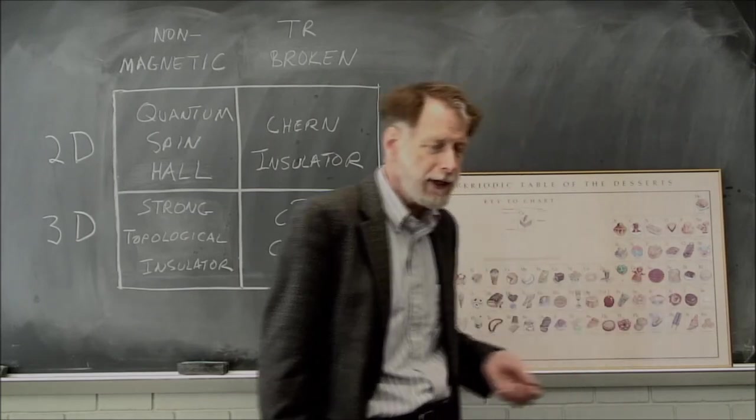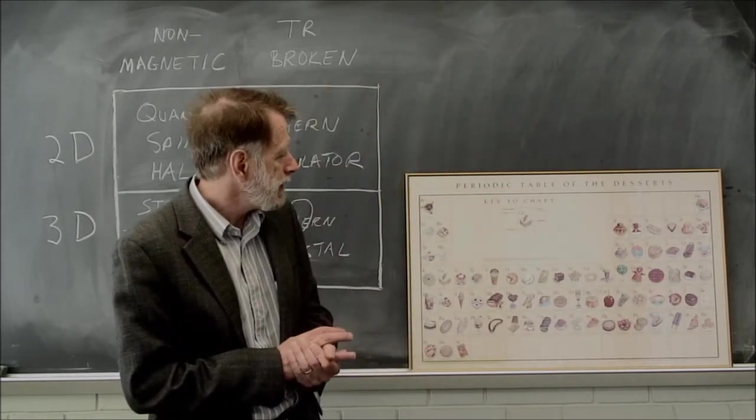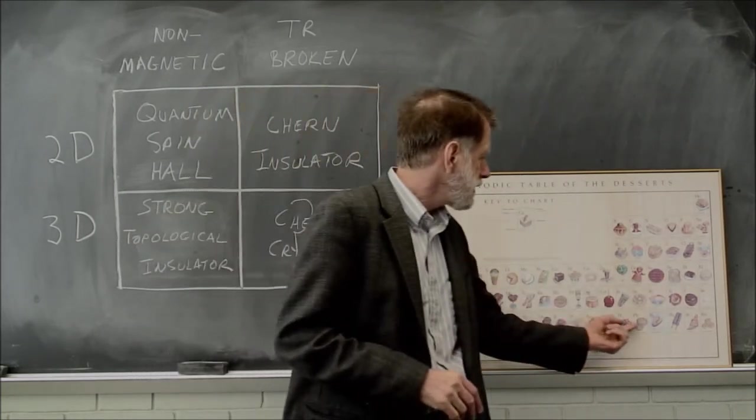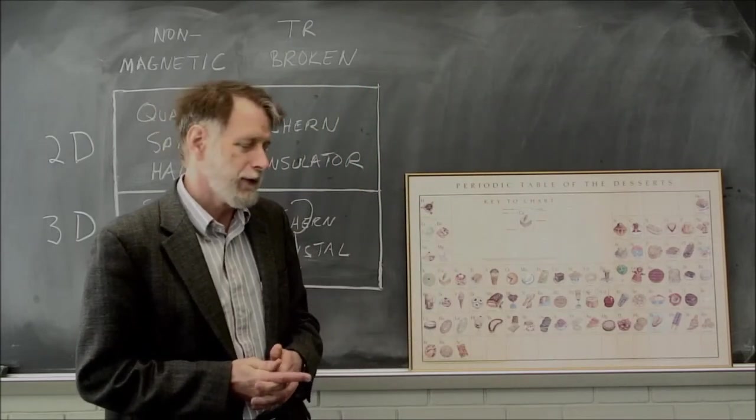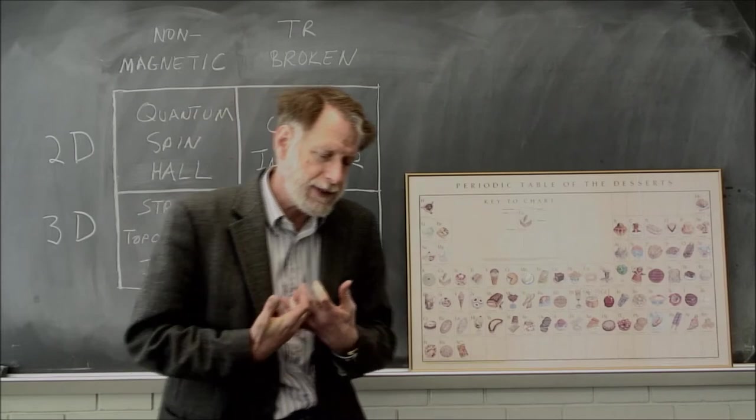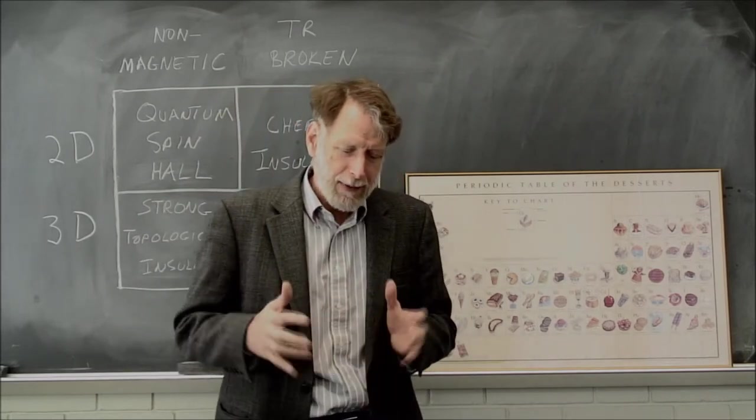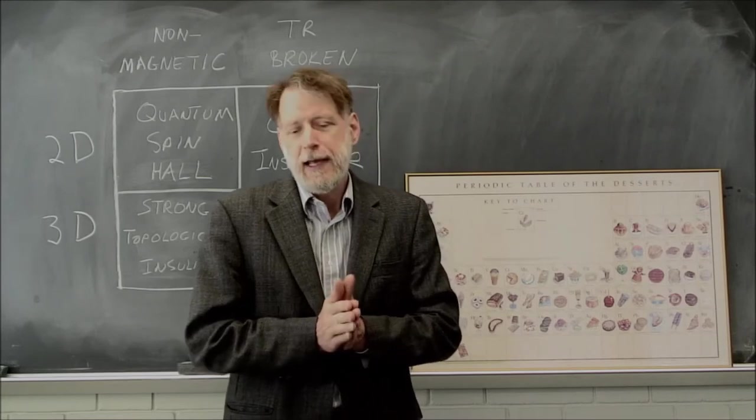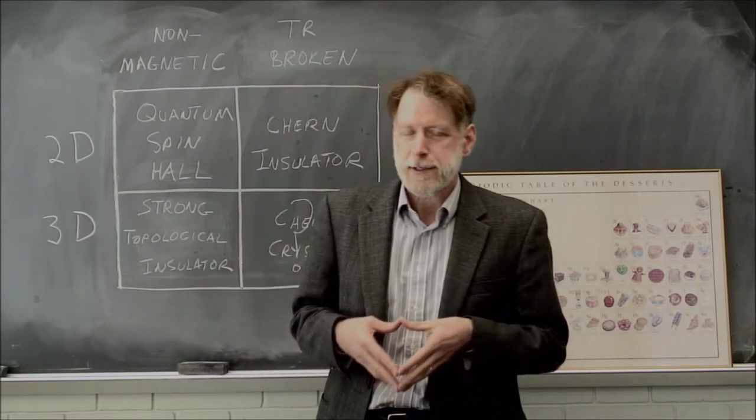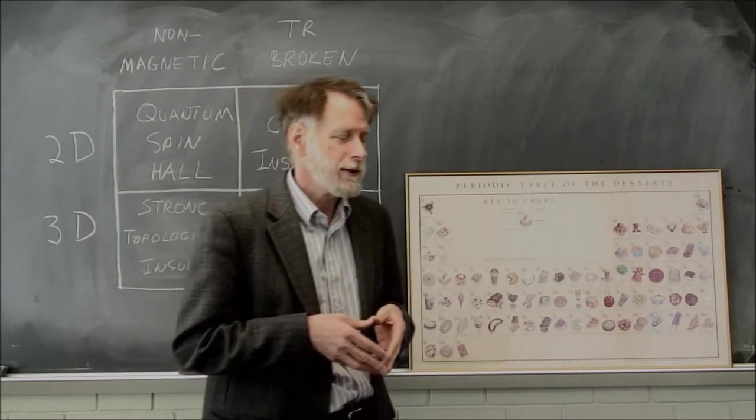As you get down to, let's say, tellurium, it's maybe getting up to half an electron volt. And by the time you get to lead and bismuth, it's approaching one electron volt. But you need to have this spin-orbit interaction because we know that if the spin-orbit interaction were zero, any insulator would be a normal insulator. It would not be a strong topological insulator.